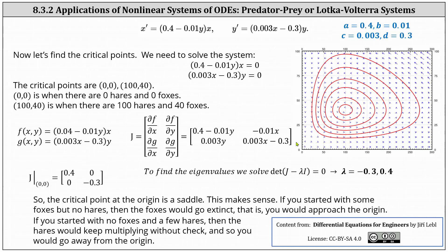Now we determine the Jacobian matrix at the critical points and find the corresponding eigenvalues. Recall the types of eigenvalues, in most cases, help us classify the critical point. At the critical point (0, 0), the Jacobian has entries 0.4, 0, 0, negative 0.3. The eigenvalues are lambda equals negative 0.3 and 0.4. Because we have two real eigenvalues with opposite sign, the critical point (0, 0) is a saddle. This should make sense: if you start with some foxes and no hares, the foxes would go extinct and you would approach the origin. If you start with no foxes and a few hares, the hares would just keep multiplying, so you would go away from the origin, which is verified by analyzing the vector field.